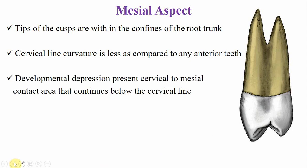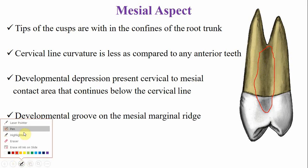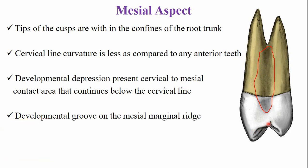From the mesial aspect, a developmental depression is present just below the contact area and continues onto the root surface. This portion is known as the mesial marginal wedge, on which there is a developmental groove — one of the identifying features of the mesial surface. The mesial root outline is initially straight, then curves towards the lingual side, while the distal outline of the root is nearly straight.